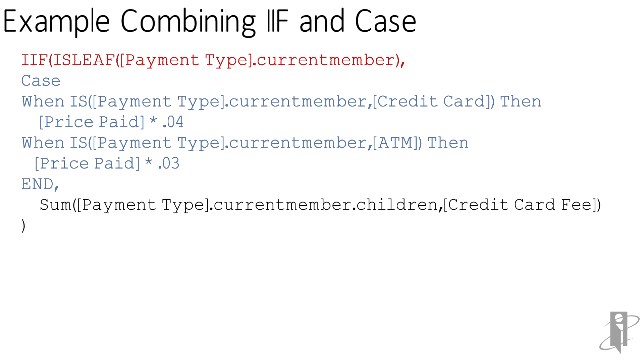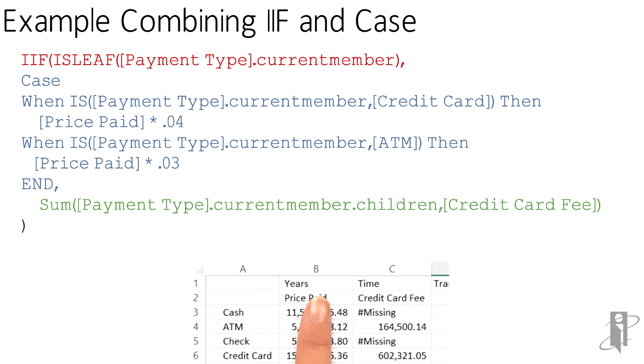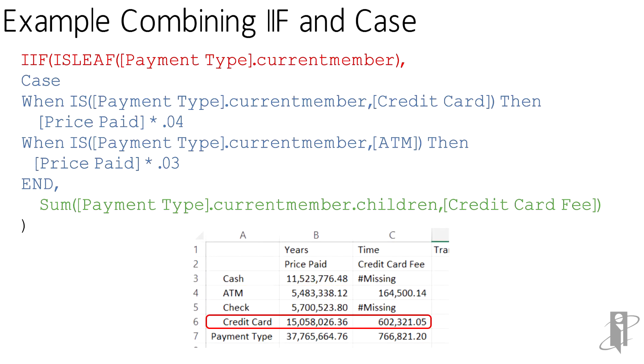So the case statement was my true statement and then the sum of the payment type, which you see in green, is going to sum up all of the children of credit card fee. So again we're getting ATM and credit card and payment type all filled.